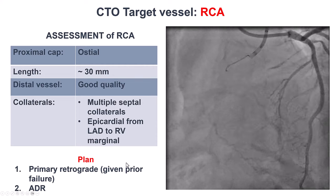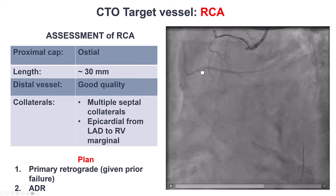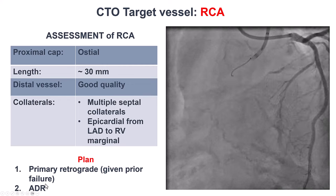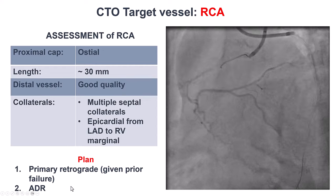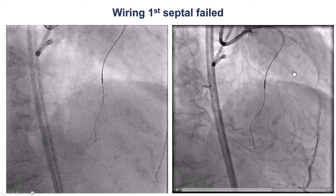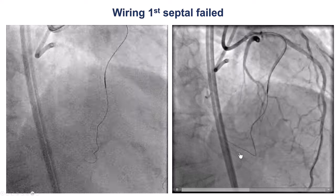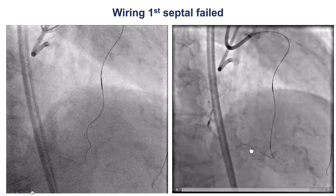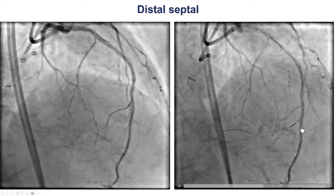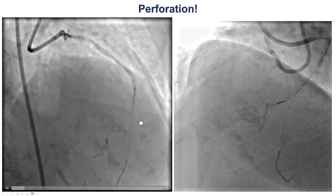There are also some epicardial collaterals. Given the previous failure, our plan was to try with a primary retrograde approach, and if that failed, try it with antegrade dissection re-entry. We tried to wire through the first septal, but unfortunately the wire did not go into the PDA — it remained inside the septum. So we decided to try to cross through a more distal septal and advanced the microcatheter and did surfing.